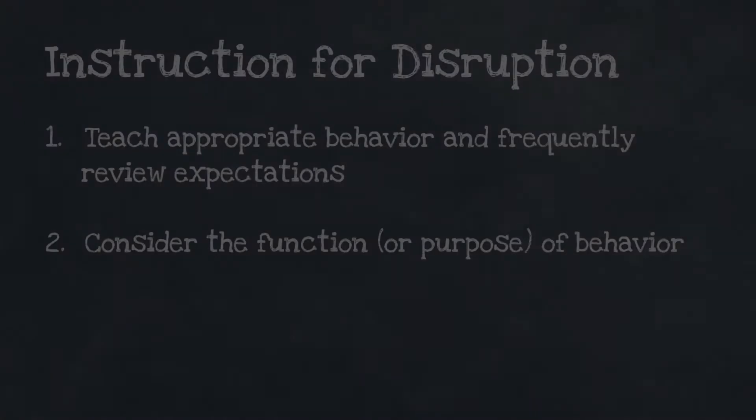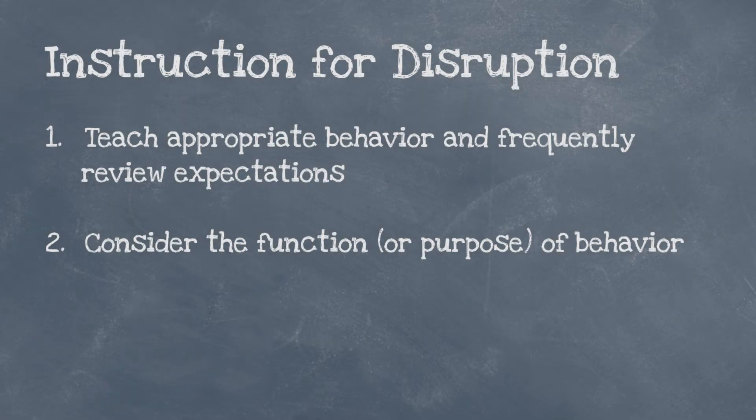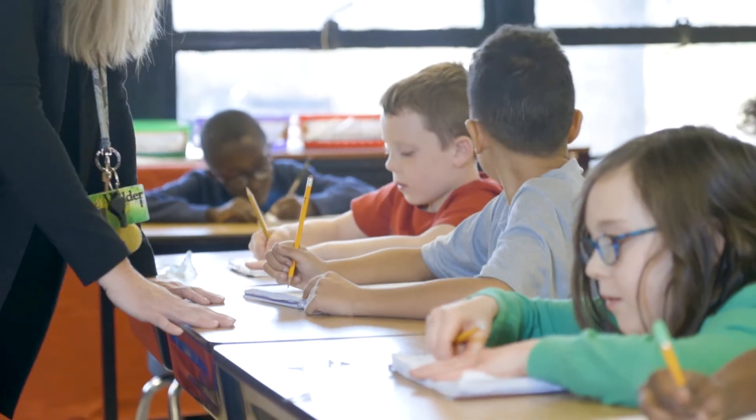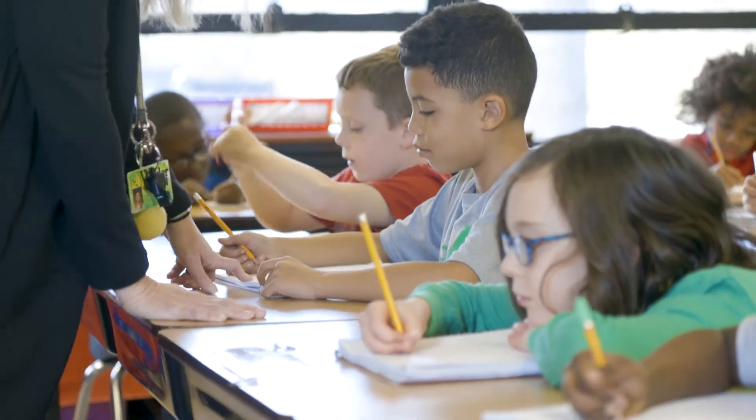To consider disruptions, let's begin with what adults can do to prevent such behaviors. Teaching appropriate behavior provides the best chance for prevention. The first key is teaching the student what to do and under what conditions — teaching students to seek attention or handle frustration in a more appropriate manner. The second key is to consider function, or why the student engages in disruptive behavior. Effective instruction must focus on teaching an effective alternative behavior that serves the same function.